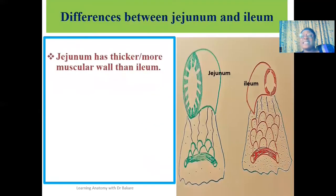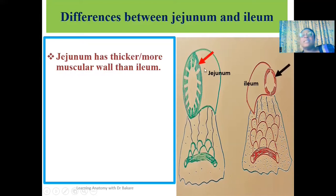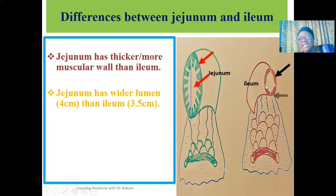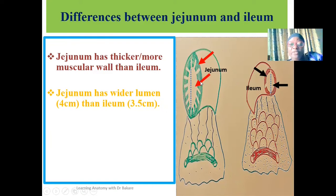The first difference is that the jejunum is thicker in wall and also more muscular. You can see that the wall of the jejunum is thicker and more muscular compared to the ileum. The second difference is that the lumen of the jejunum is wider than the lumen of the ileum. The lumen of the jejunum is about 4 cm, while the lumen of the ileum is about 3.5 cm.